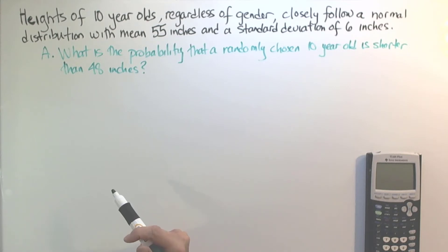One of the things we would like you to focus on is carefully defining your variables and using proper symbols and notation throughout the problem. So to demonstrate that, let's start by defining our random variable.